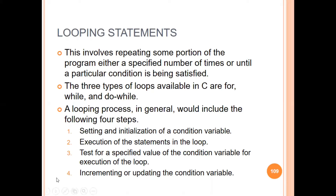We are going to execute these looping statements. There are two or three steps involved. We will look at the looping variable, also called the control variable. You will initialize the looping variable, set its value, and decide when to change the loop. We will execute a set of statements repeatedly as a single task, and test the specified condition for the control variable.